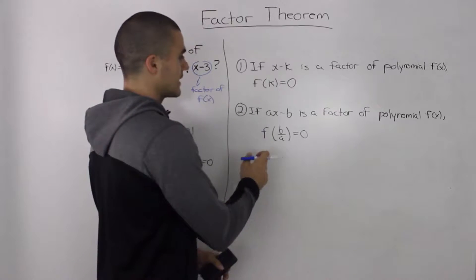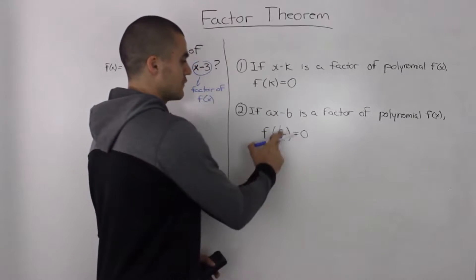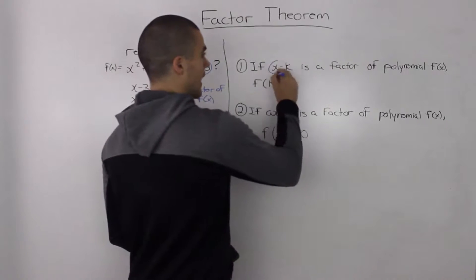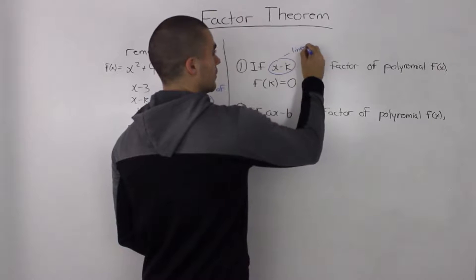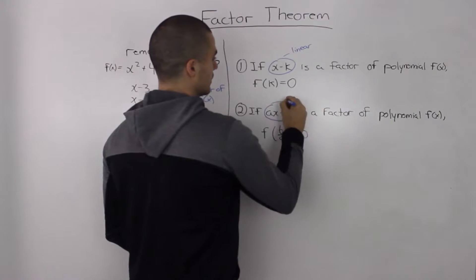The second case is if ax - b is a factor of polynomial f(x), then f(b/a) = 0. Notice that, as with the remainder theorem, we can only use the factor theorem when our divisors are linear.